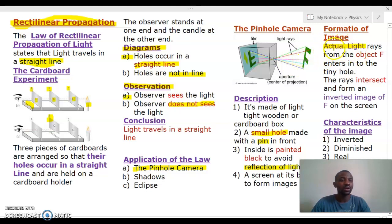So what do we say here? Actual light rays from the object F enter into the pinhole and an image is formed on the screen. Now this aperture or this hole is normally covered with a shutter or a black cloth.